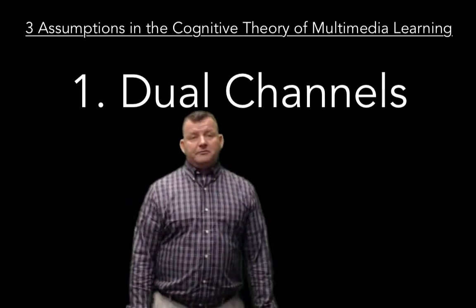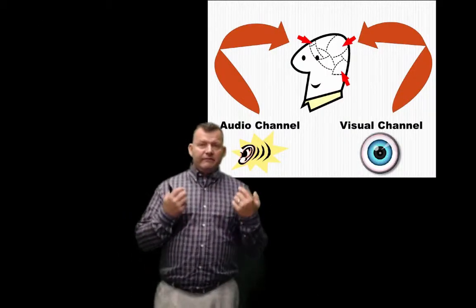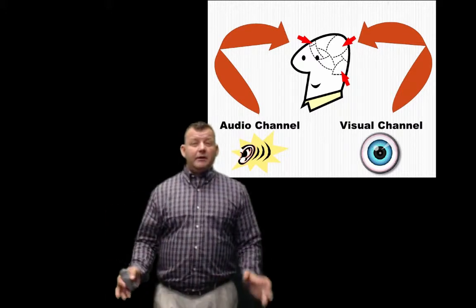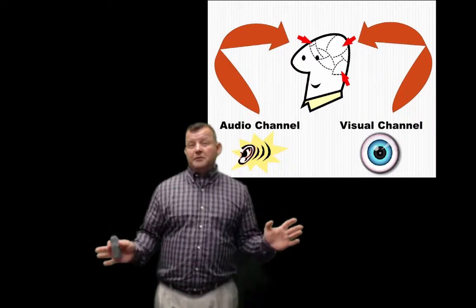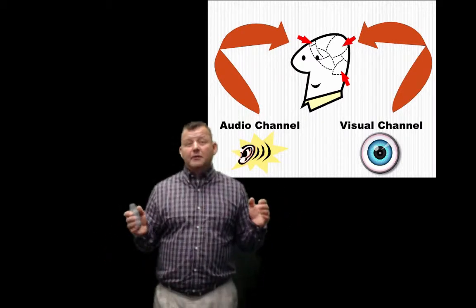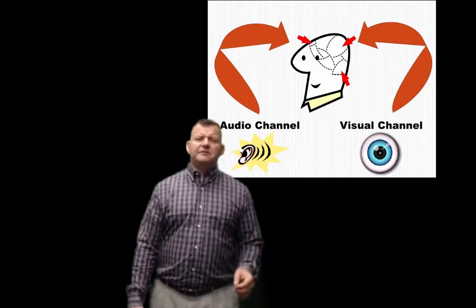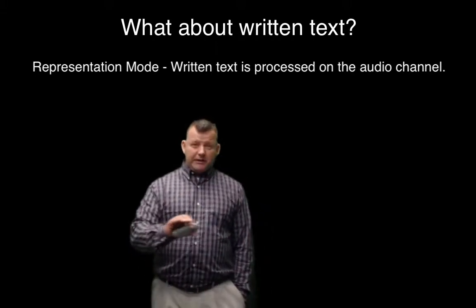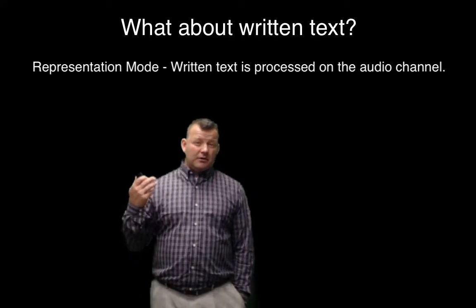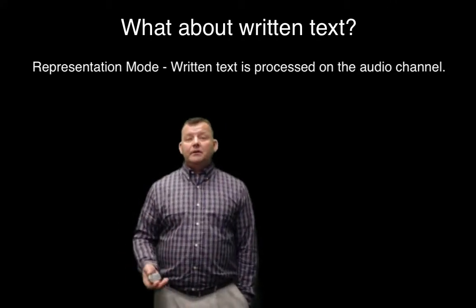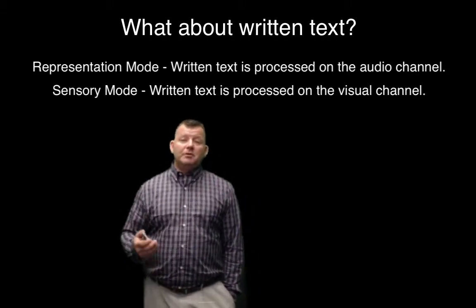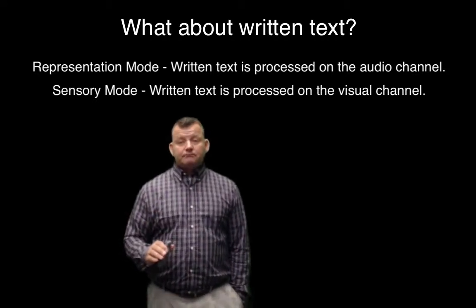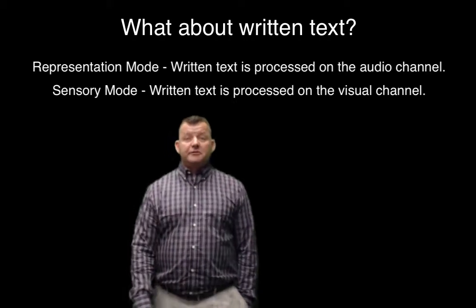The first assumption is called dual channels — the idea that we have information coming in visually and through audio on two different channels. For the most part, researchers agree this is accurate. However, there is some discussion about how written text is processed. Those of the representation mode believe that visual text is processed as a verbal channel — even though you're reading with your eyes, you're verbalizing it internally and it's processed through the audio channel. The sensory mode folks believe it comes in through the visual channel as you read.